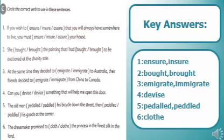Number six: The dressmaker promised to clothe the princess in the finest silk in the land. 'Cloth' (C-L-O-T-H) means fabric; 'clothe' (C-L-O-T-H-E) means to garment or dress. You have to circle 'clothe'. Key answers are also mentioned for more understanding.